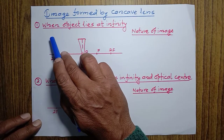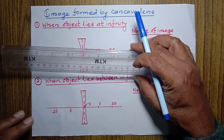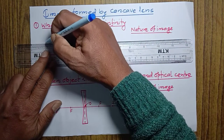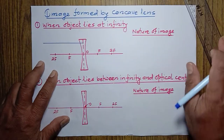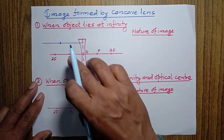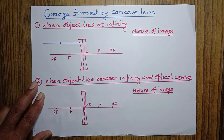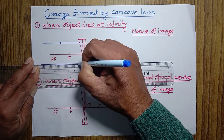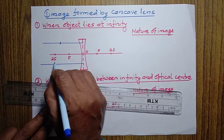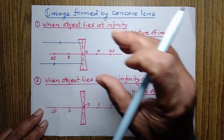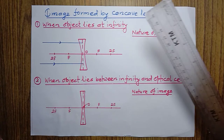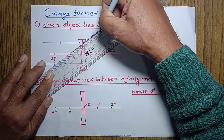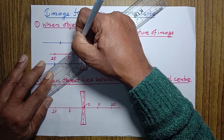First condition: when the object lies at infinity. In this condition, we cannot draw the object because it is at infinity. That's why I am drawing a ray of light coming from the object parallel to the principal axis. Because if a ray of light comes parallel to the principal axis, it appears to diverge from focus. Only one ray is not sufficient, so we must have at least two rays coming from the object. Both rays are parallel to the principal axis, and both appear to diverge from focus.